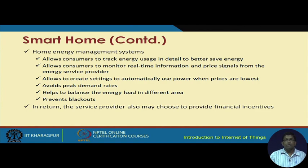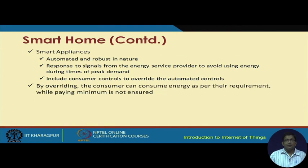In a smart home, consumers can track their energy use in detail to save energy in a better way. The home energy management system allows this to be done. It also allows consumers to monitor real-time information and price signals from the energy service provider. It allows creating settings to automatically use power when prices are lowest, helps in avoiding peak demand rates, and prevents blackouts and brownouts. In return, the service provider may also choose to provide financial incentives.